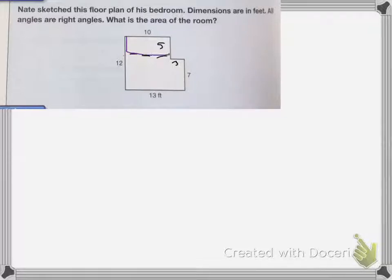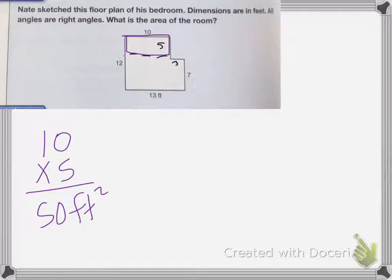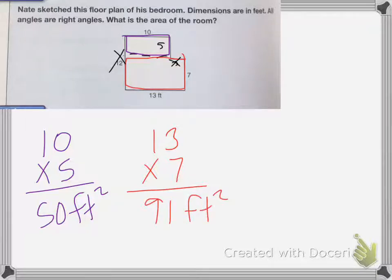So for my small rectangle up here, I have 10 times 5, which is equal to 50 feet squared. And then for my bigger rectangle, which is this bottom portion, I have 13 times 7. Notice I didn't use 12, and I didn't use 3, because those two lengths are either too long or too short for the shapes I'm working with. So 13 times 7 is 91 feet squared.